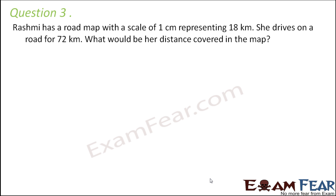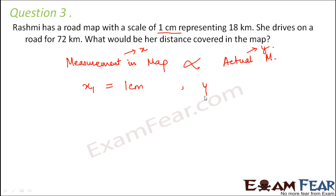Question number 3. Rashmi has a road map with a scale of 1 centimeter representing 18 kilometers. She drives on a road for 72 kilometers. What would be her distance covered in the map? In this case again, we have two quantities. One quantity is the measurement in the map. The other quantity is the actual measurement. These are directly proportional to each other. So let's assume this quantity represented by x, this is represented by y. So x1 is 1 centimeter and corresponding actual measurement is 18 kilometers. So y1 is 18 kilometers.